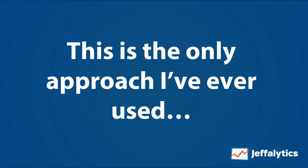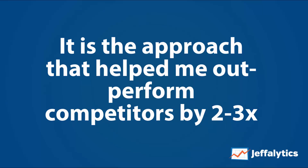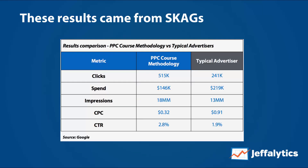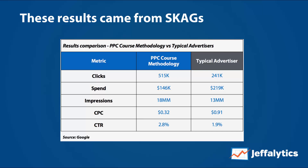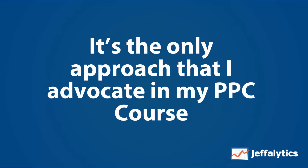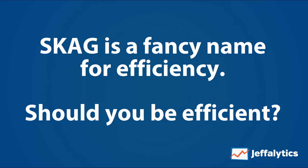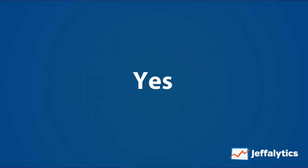So what's my verdict? This is the only approach I've ever used in AdWords, and it works. It's the approach that helped me outperform my competitors by two to three times. Google provided data showing that for $70,000 less, we got over double the clicks for one account by being efficient — essentially 3x the results. It's the only approach I advocate in my PPC course. I call it granular, tight-knit ad groups — SKAG is just a fancy name for efficiency. Should you be efficient? Yes, you absolutely should.